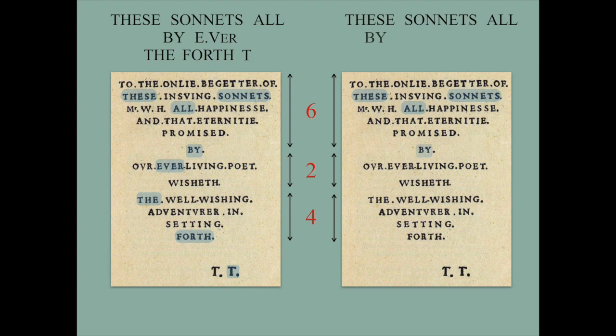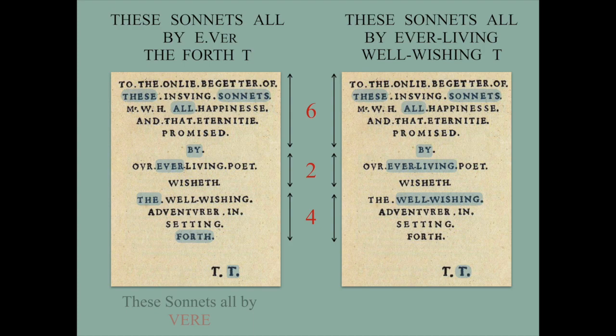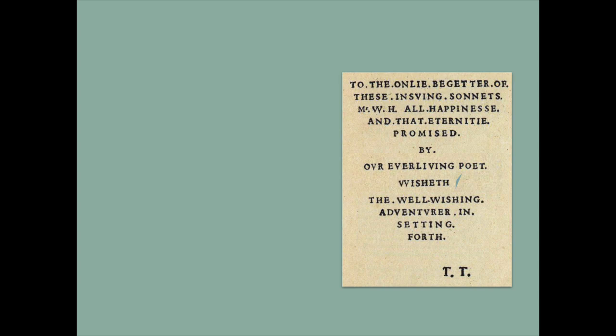Now let's count the 6-2-4 order without the hyphens, just the words demarcated by dots: 'these sonnets all by ever living, well wishing T.' T as we know is God, Christ — same thing. 'These sonnets all by ever living' — he's immortal — 'well wishing' means benevolent, Latin 'benevolence' — 'well wishing God.' So just by switching on or off the hyphens, you either have 'these sonnets all by Vere' or 'these sonnets all by God.' That's the third time.